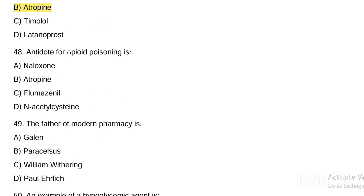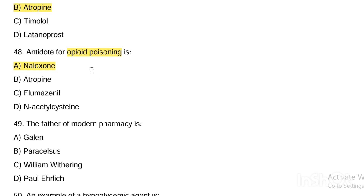Next question. Antidote for opioid poisoning is: Option A, naloxone. Option B, atropine. Option C, flumazenil. Option D, N-acetylcysteine. Answer is Option A — naloxone. Remember: organophosphate poisoning → atropine; paracetamol poisoning → N-acetylcysteine; heparin overdose → protamine sulfate; opioid poisoning → naloxone.